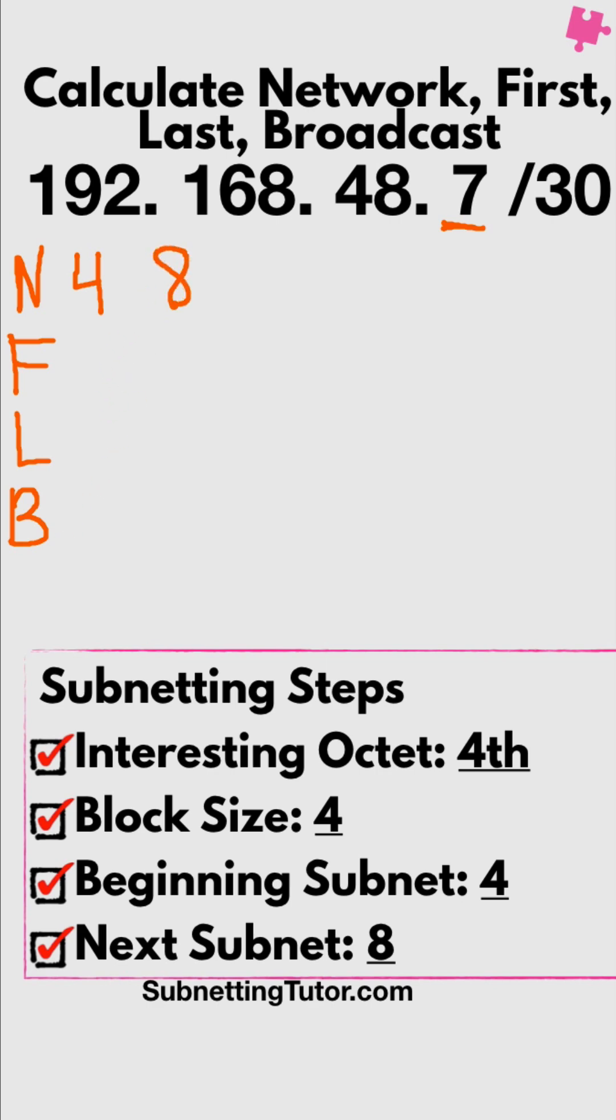We know broadcast is one less than the next one, so this is 7. The last is one less than broadcast, which is 6. The network is 4, and the first is one more than network, so it's 5.